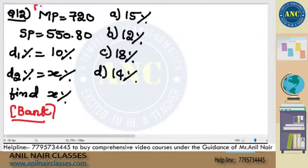Market price is the initial value. Selling price is the final value.